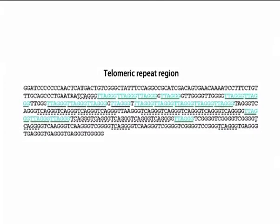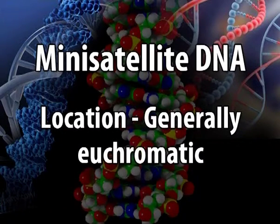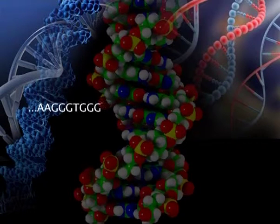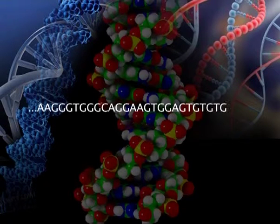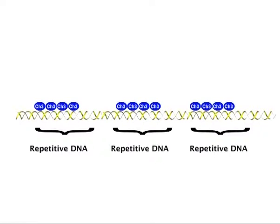The second type is mini-satellite DNA, whose units are 15 to 400 base pairs, averaging about 20, and they are repeated 20 to 50 times, giving a total length of 1,000 to 5,000 base pairs. They are located in the euchromatic region of the chromosome, as opposed to satellite DNA which is in the heterochromatic region. The best examples of mini-satellite DNA are DNA fingerprints — tandemly repeated but often dispersed in clusters, also called VNTRs or variable number tandem repeats.